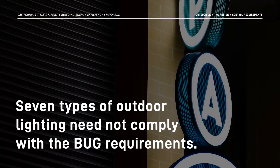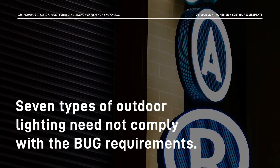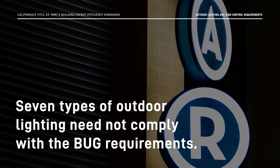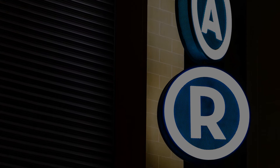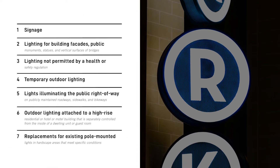Seven types of outdoor lighting need not comply with the BUG requirements. Illuminated outdoor signs are one such example.